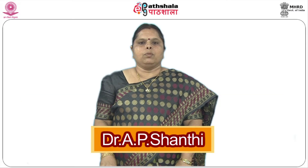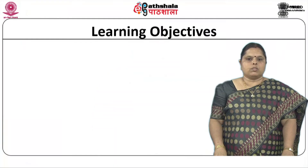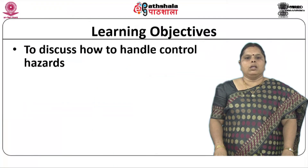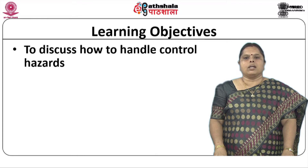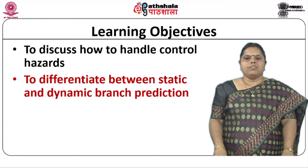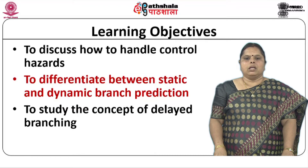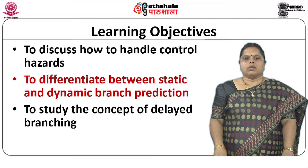Welcome to the ePath Shaila lecture series in Computer Science. We are dealing with the course Computer Architecture. This module discusses handling of control hazards. The objectives of this module are to discuss how to handle control hazards, differentiate between static and dynamic branch prediction, and look at the concept of delayed branching — all techniques for handling control hazards.